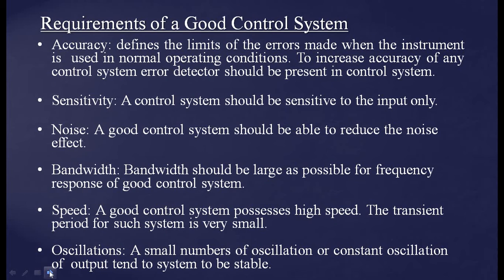Requirements of a good control system: first is accuracy — it defines the limits of errors made when the instrument is used in normal operating conditions. To increase accuracy, an error detector should be present in the control system. Then sensitivity — a control system should be sensitive to input only; a slight change in input must be noticed and accordingly the output must change. Then noise — a good control system should be able to reduce the noise effect; noise must be minimum.